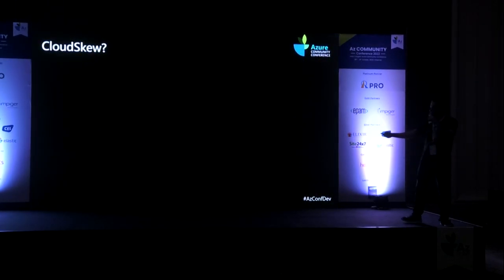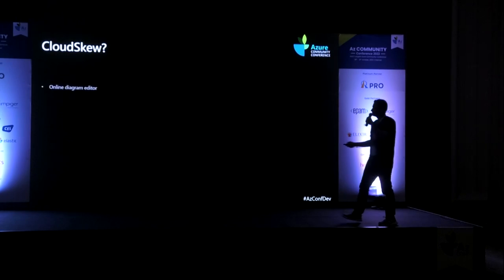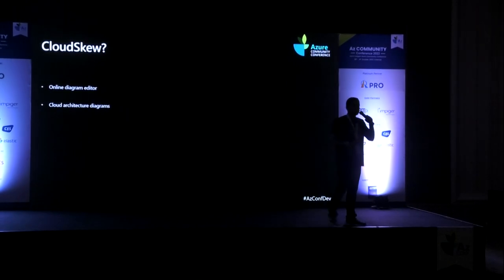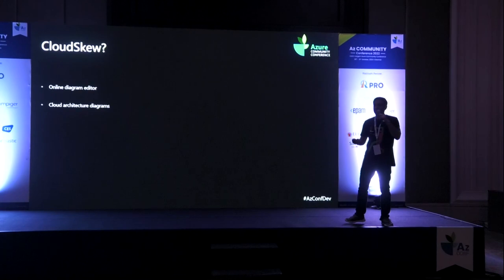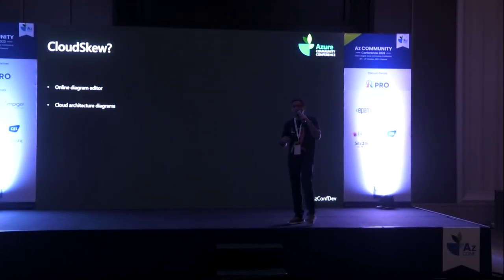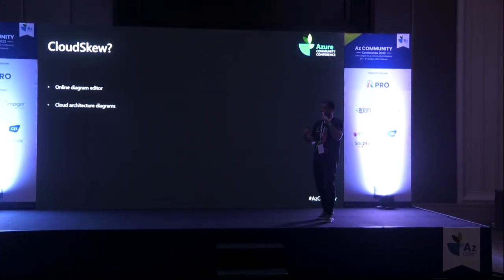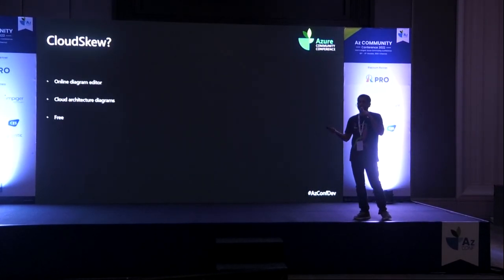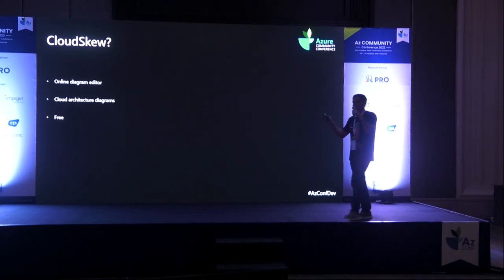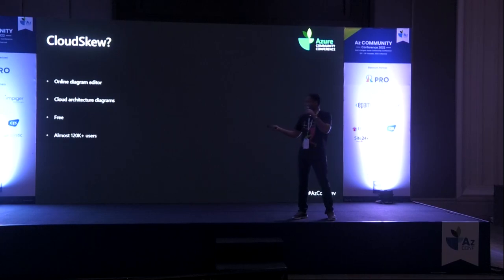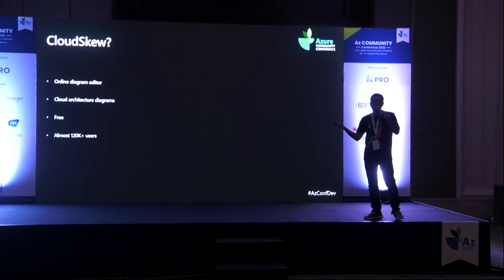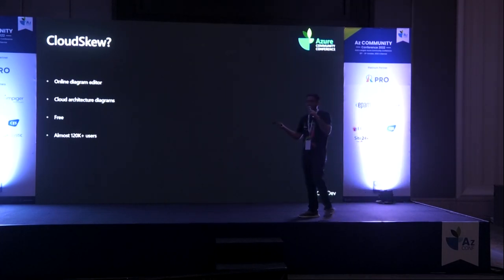So what is Cloud SKU? Like I said, it's an online diagramming editor. You can draw flowcharts, module diagrams, and use it to draw AWS, Azure, GCP, Kubernetes, Alibaba Cloud, IBM Cloud — whatever cloud architecture diagrams you need to draw, you can draw it with Cloud SKU. All the icons are built in. The first couple of diagrams are free; after that it's paid. I have almost 120K-plus users, though not all of them are daily active users — nobody draws a diagram on a daily basis.